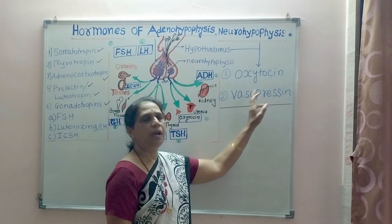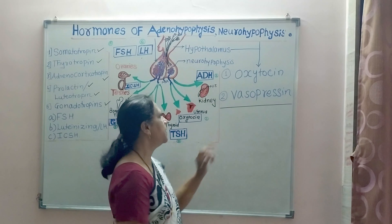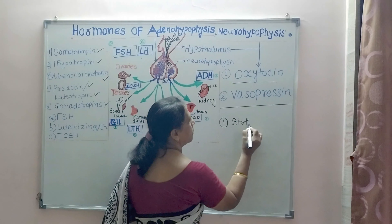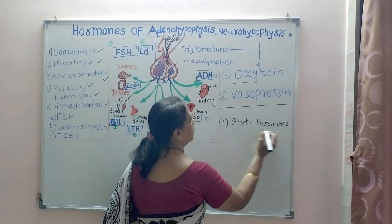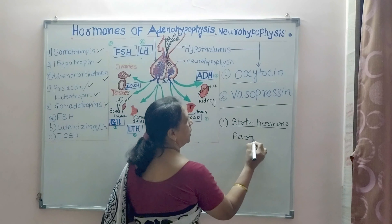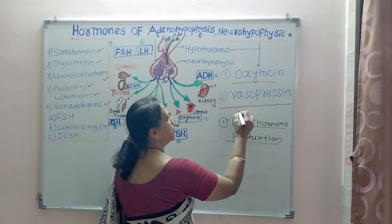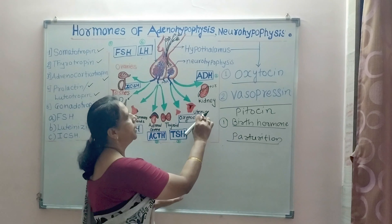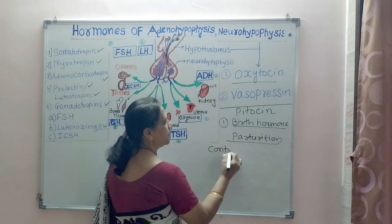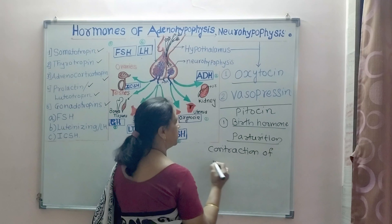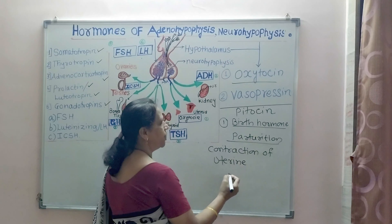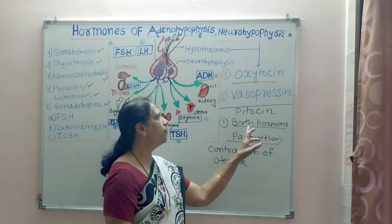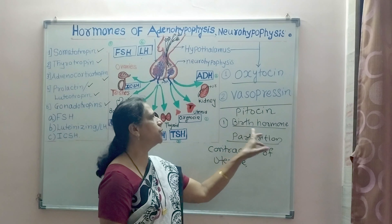The first hormone is oxytocin, also called the birth hormone or pitocin, as it helps in parturition. It acts on the uterus and causes contraction of uterine muscles. It also stimulates the mammary glands, and ejection of milk takes place due to oxytocin.